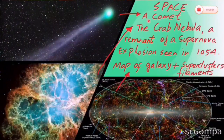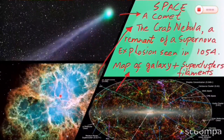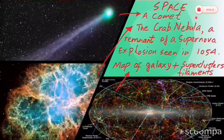Here is a comet and the Crab Nebula — a remnant of a supernova explosion seen in 1054. There is also the map of the galaxy and superclusters.